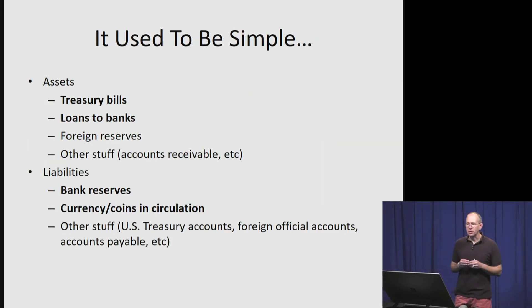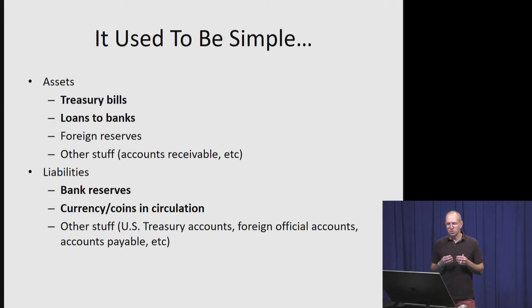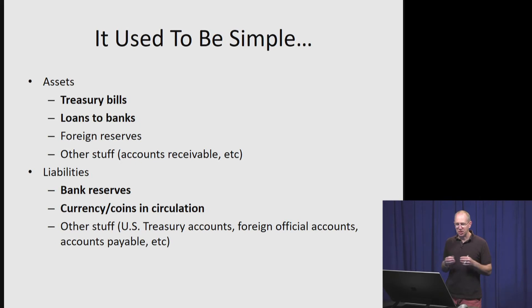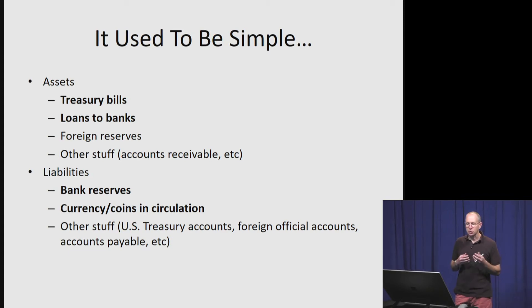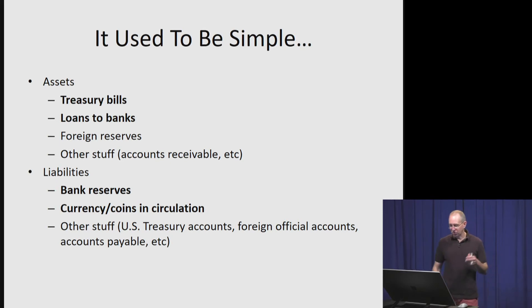As a quick summary of what the balance sheet used to look like: on the asset side, they would have Treasury bills, loans to banks, foreign reserves held in units of foreign currency, and other standard business items like accounts receivable. Their liabilities were almost exclusively made up of bank reserves and currency and coins in circulation, along with some Treasury accounts, foreign central bank accounts, and accounts payable.